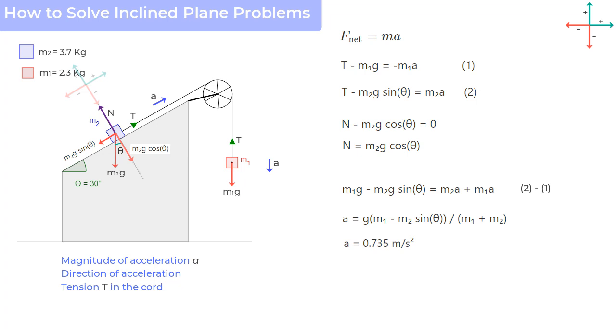And if a had turned out to be negative number, let us say, our assumption would have been incorrect. And the direction of motion would have been opposite to our assumption.